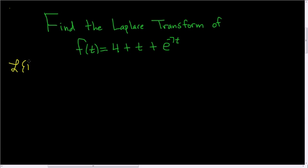First, the Laplace transform of 1 is equal to 1 over s. And the Laplace transform of t to the n, this is equal to n factorial divided by s to the n plus 1.